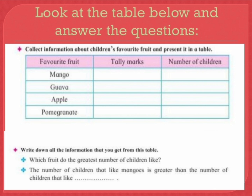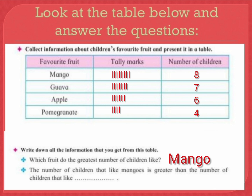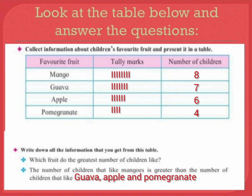Let's solve one more example. Collect information about children's favorite fruit and present it in a table. We have to draw the tally marks to show the number of children: Mango 8, Guava 7, Apple 6, Pomegranate 4. Which fruit do the greatest number of children like? Mango — the number of children that like mangoes is greater than those who like guava, apple, and pomegranate. Please note that the information will differ as the tally marks are drawn according to the information you collect.